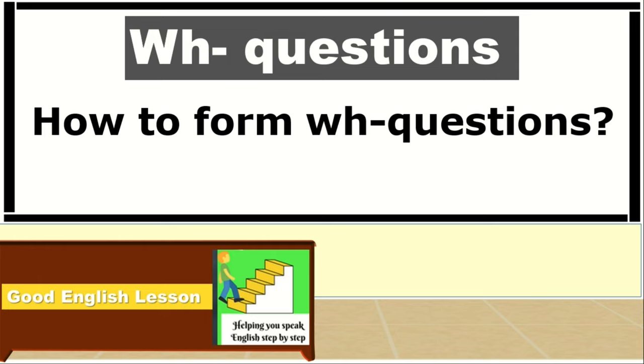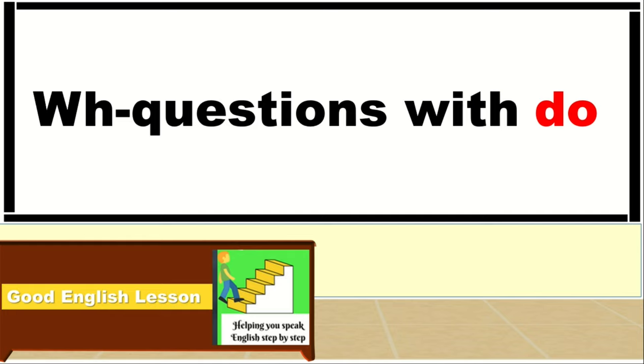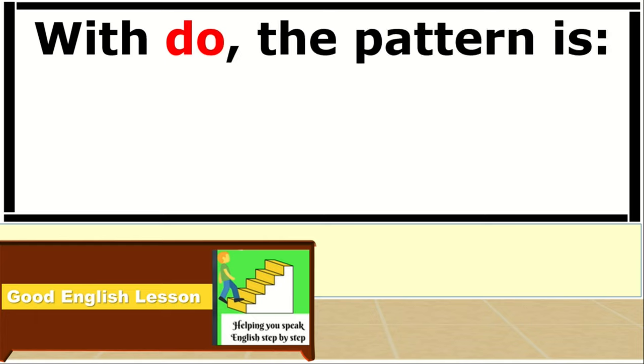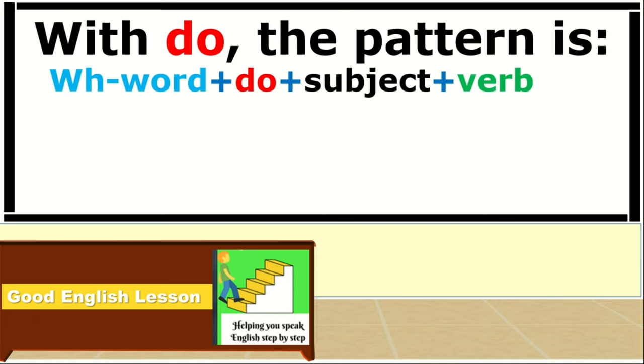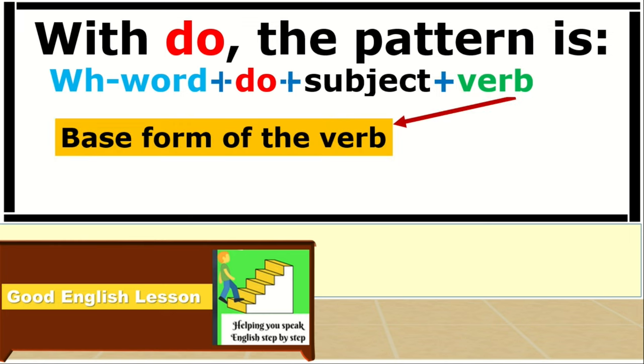How to form wh-questions? Wh-questions with DO. First, let's see wh-questions with DO. With DO, the pattern is: wh-word plus DO plus subject plus verb. We have to say that the verb is the base form. The base form of the verb that we should use.